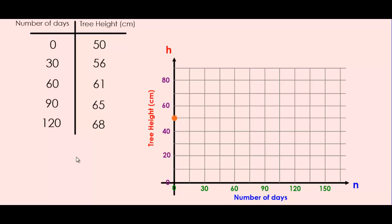Our next point is (30, 56). So that's 30 along the n-axis, 56 along the h-axis, which would put us around here. You'll need to do your best to estimate where that goes on the h-axis, because it's in between grid lines. Here's how the rest of the points would get plotted on the graph.